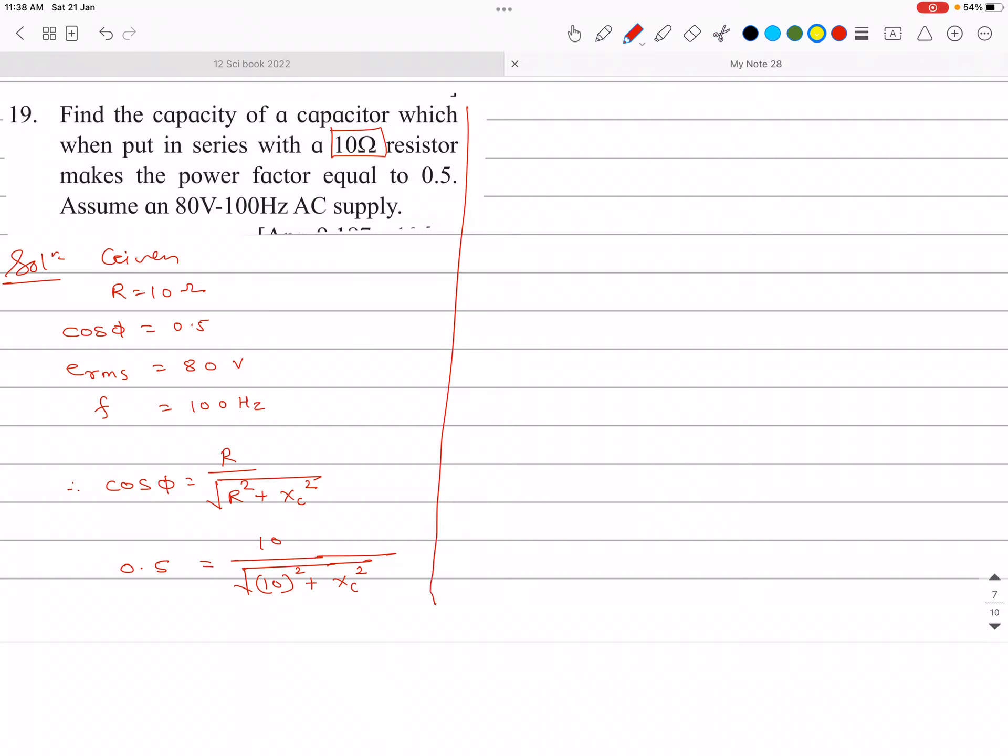Now we can write here under root 10 square is 100 plus XC square is equal to 10 divided by 0.5, so it is coming 20.